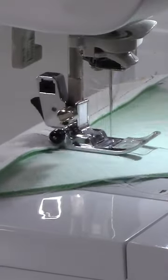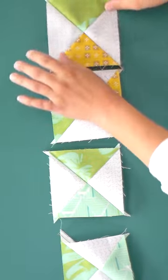Sew a scant quarter inch seam down both sides of the drawn lines and cut apart to reveal four quarter square triangles.